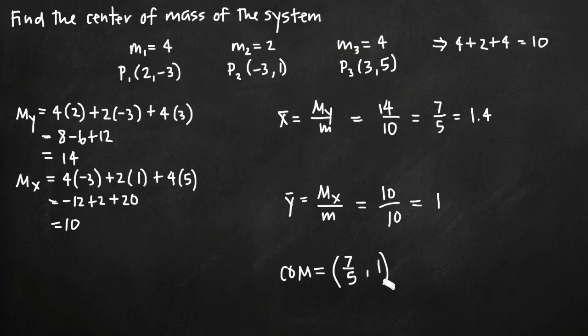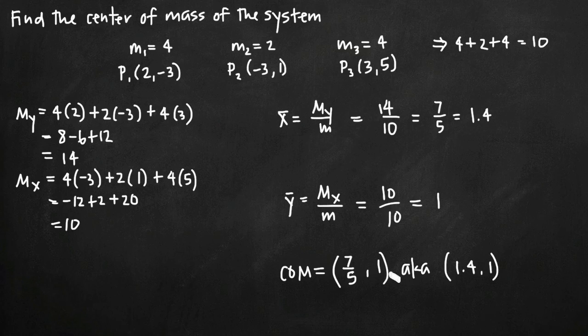So we can either call the center of mass 7/5, 1, or sometimes we like to see it in decimal form, it would be 1.4, 1. Either way, either one describes the center of mass of this system, given these point masses at coordinate points.